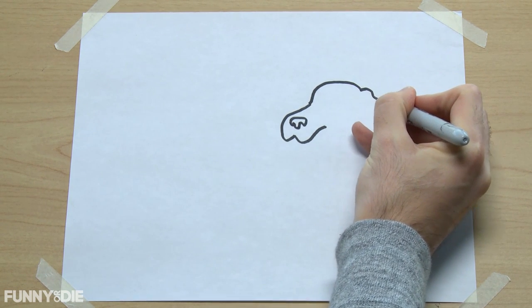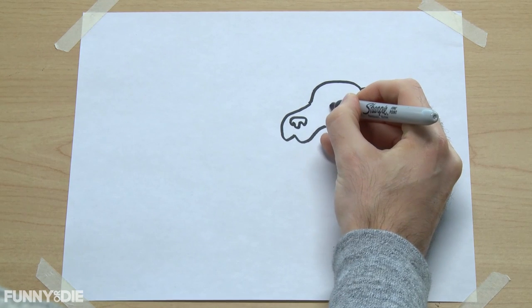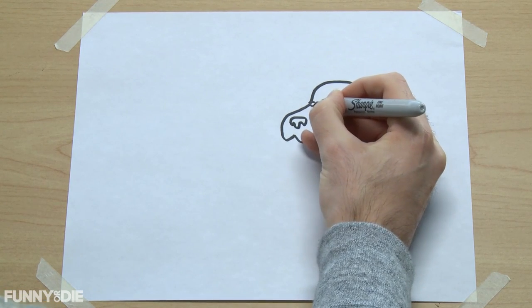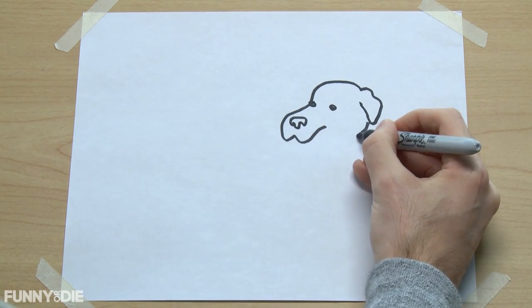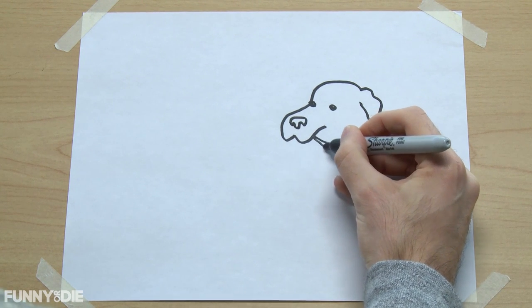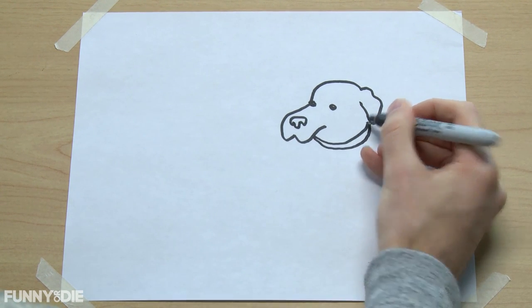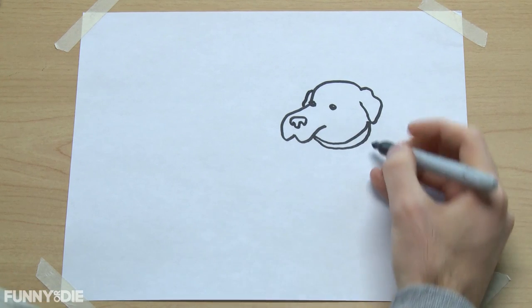Top of his head and ear, two eyes, collar, and just a little bit of his other ear.